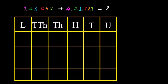Here let us do the addition of 1,043,057 plus 4,21,689. This is the 1 lakh position, so we must write this 1 at the lakh position like this. Now we are organizing this in a vertical fashion.